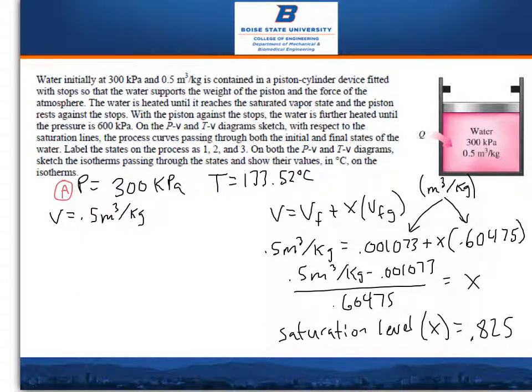In this question, water initially at 300 kilopascals and 0.5 meters cubed per kilogram is contained in a piston-cylinder device fitted with stops so that the water supports the weight of the piston and the force of the atmosphere.